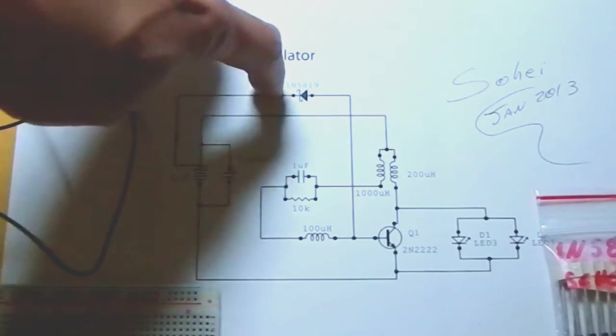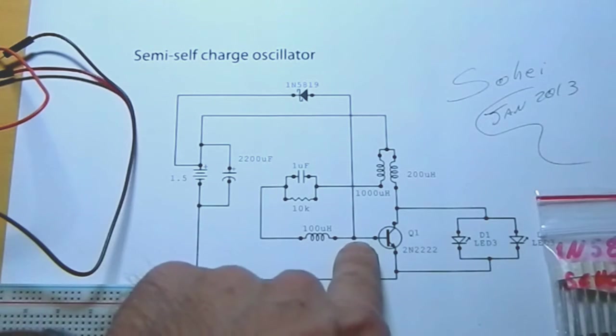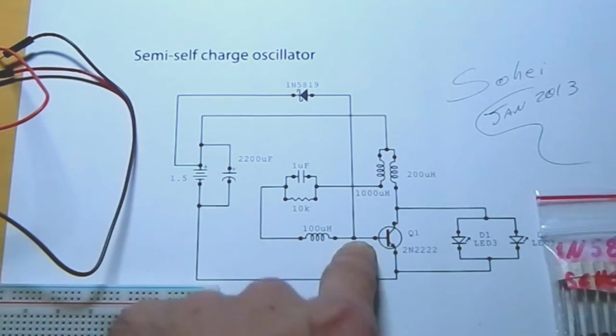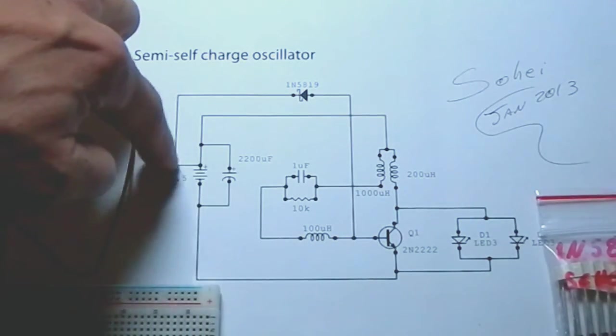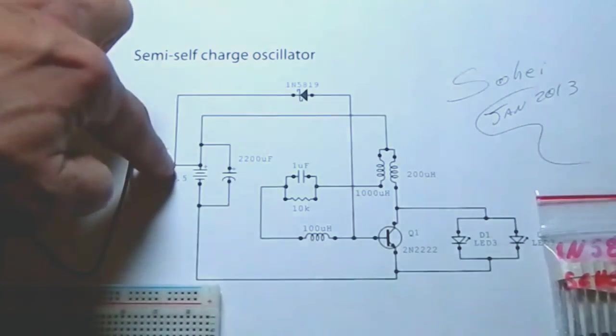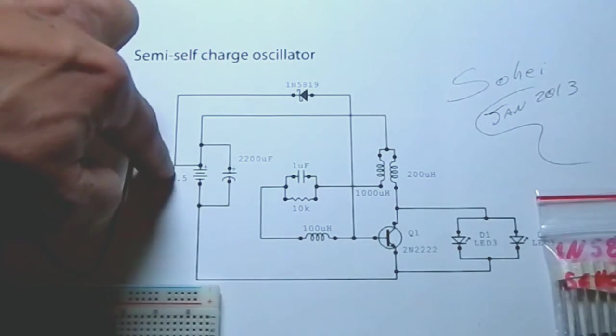1N5819. And it's coming from the base of the 2222. Back to the battery. Not to the capacitor. But to the battery. Direct to the battery.